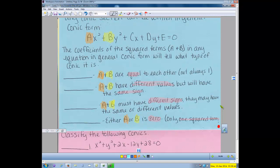This is the general conic form. The coefficients of the squared terms a and b in any equation in general conic form will tell us what type of conic we have. If a and b are equal to each other, we have a circle.